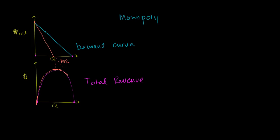Now let's think about our cost possibilities. Down here, let me draw a total cost curve. At first we don't have much variable cost, but we do have some fixed costs. Then as we produce more and more, our variable costs increase. So our total costs might look something like that — that is total costs.